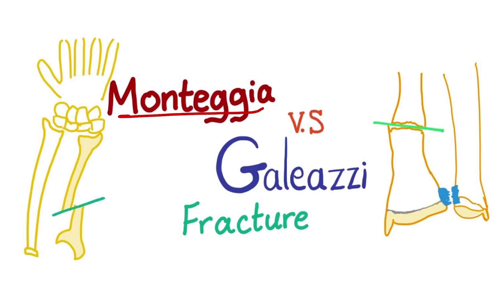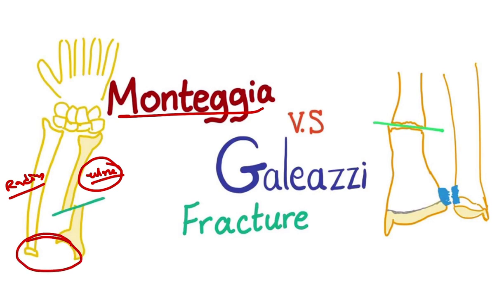The Monteggia fracture occurs in the ulna — this is the ulna and this one is the radius. When there is ulnar fracture, it is the Monteggia, and there is also dislocation of the proximal radial joint. On the other hand, in Galeazzi (GR), there is radial fracture with dislocation of the distal radial joint.